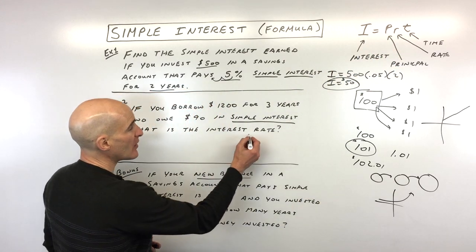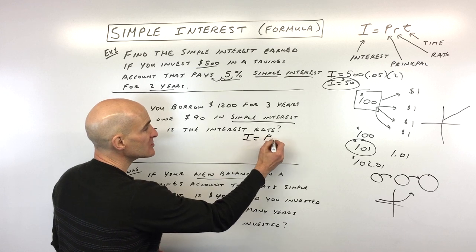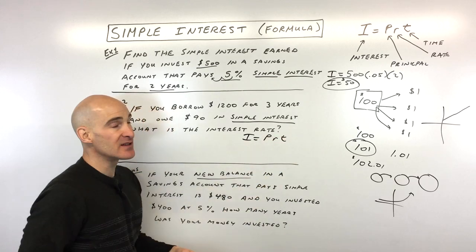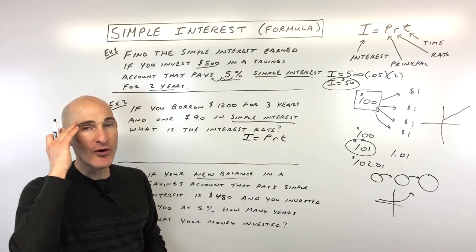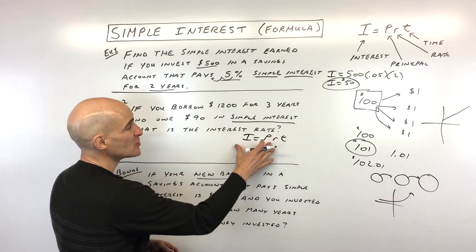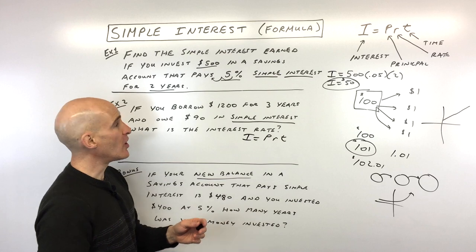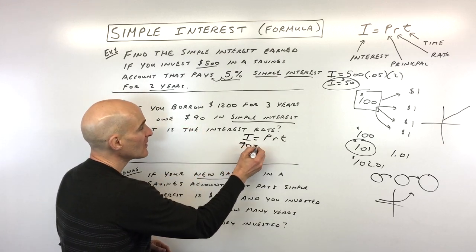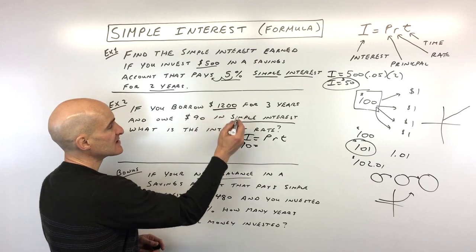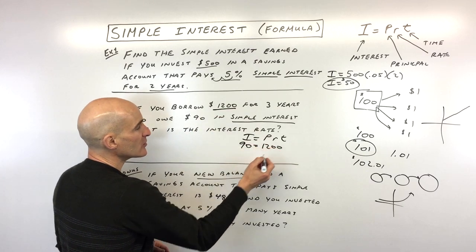The first thing I like to do and recommend to students I tutor in person is write down that formula first. Number one, it helps you memorize it. Number two, it helps you organize what you know and what you need to solve for. In this case, we know the interest is $90. The principal is the starting amount, the amount you're borrowing, which is $1,200.